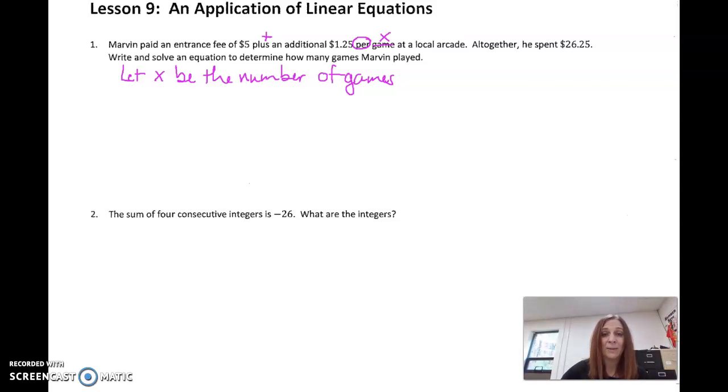So he's going to pay $5 plus $1.25 per game. That's where we multiply. Two games, we multiply $1.25 by 2. Five games, $1.25 by 5. All together, there's our equal sign there. He spent $26.25. So we have our equation here. Now we have to solve it to figure out how many games he played.